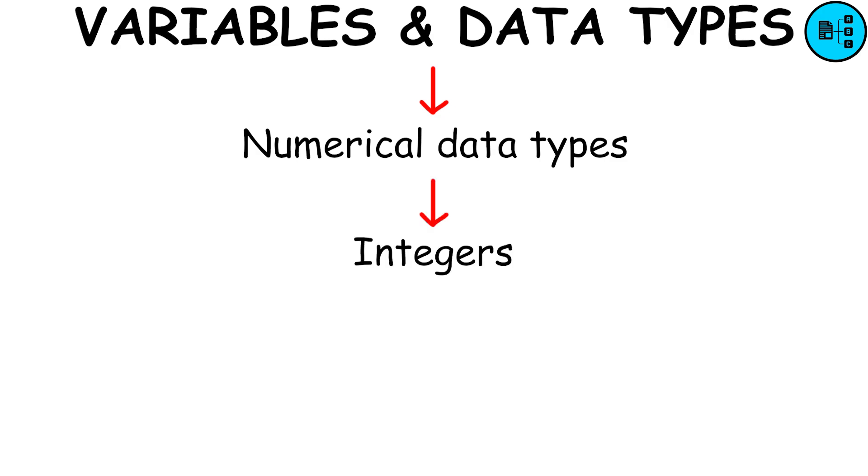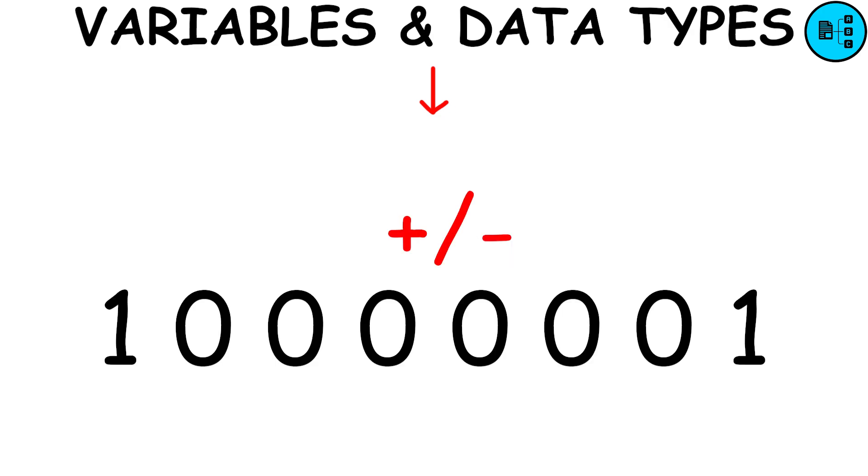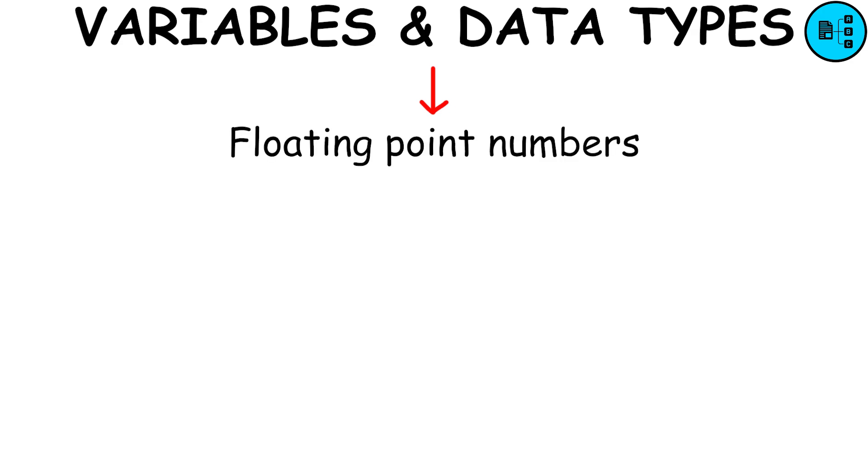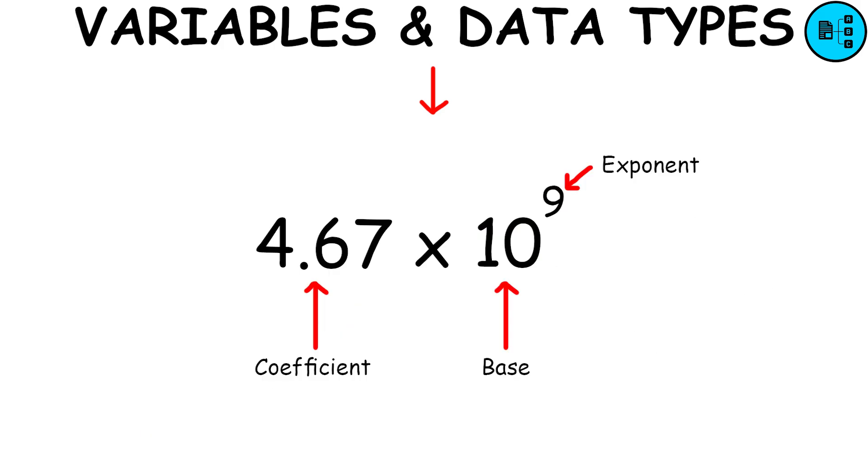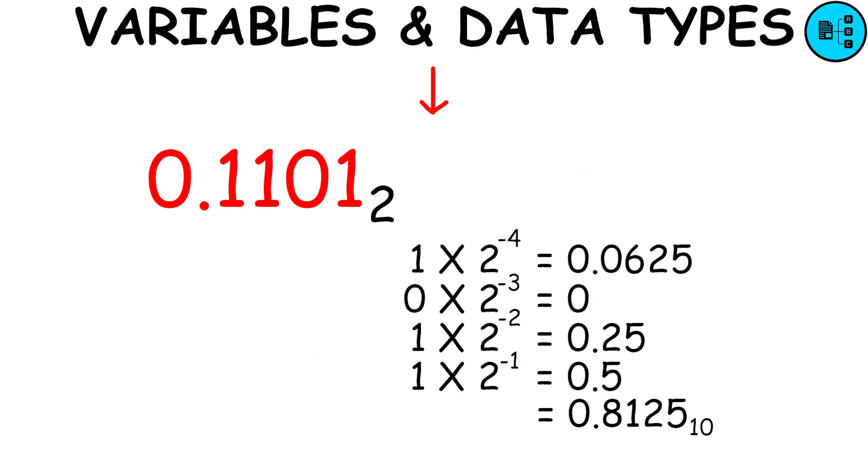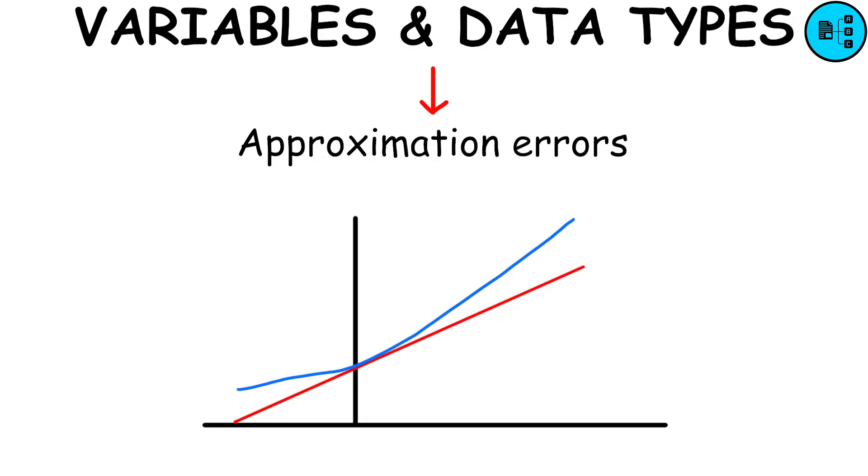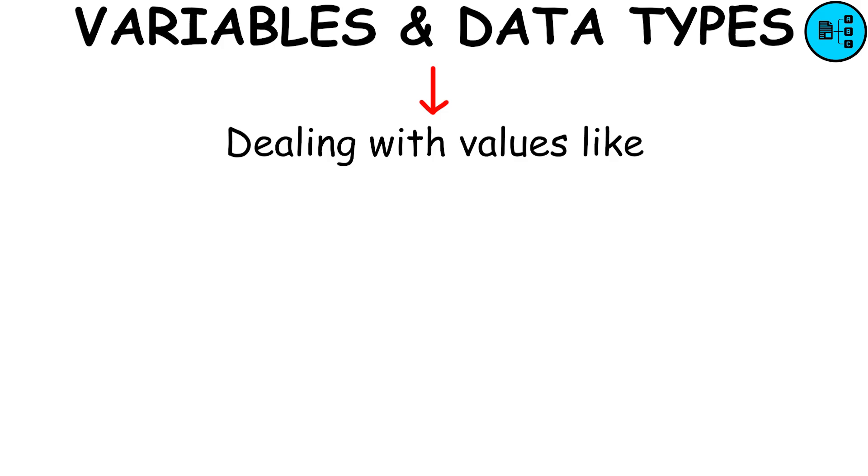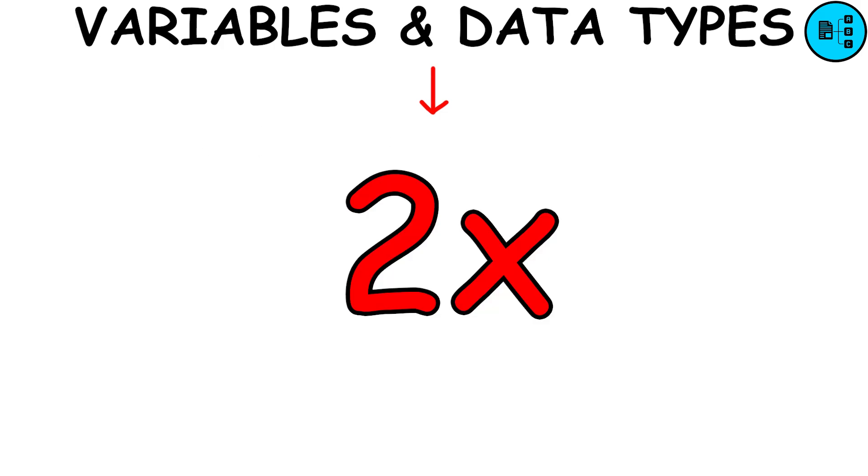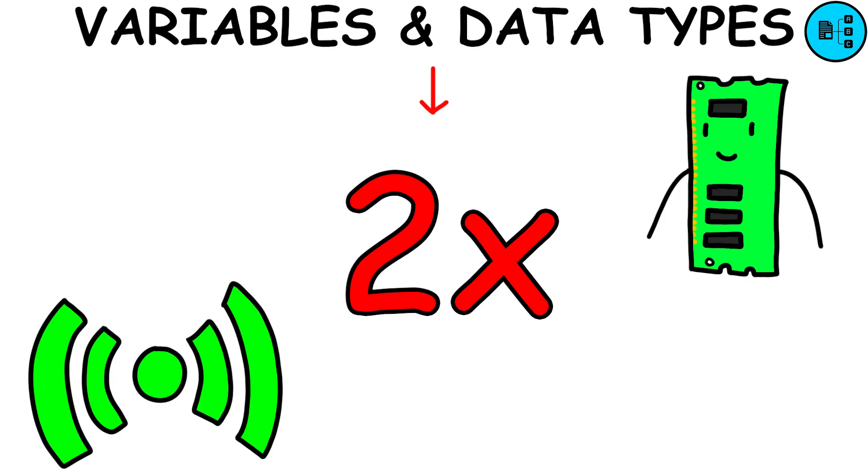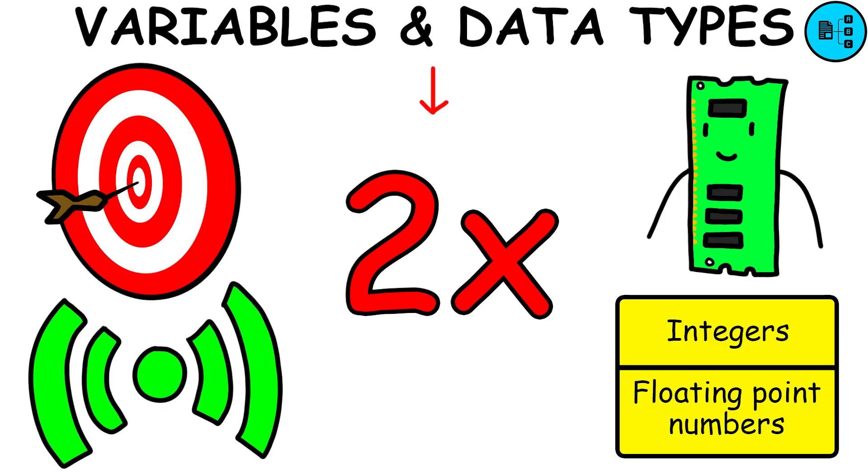Numerical data types include integers, representing whole numbers that can be either signed, negative or positive, or unsigned. Floating point numbers, on the other hand, include decimal points, and are named as such because the decimal point can be positioned flexibly to balance precision and range, often utilizing scientific notation. Floating point numbers are represented using binary fractions, which may lead to approximation errors due to finite memory, especially when dealing with values like one-third. Extended precision types, such as long and double, utilize double the memory to enhance the range and precision of integers and floating point numbers.